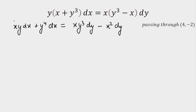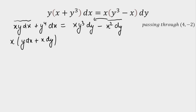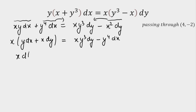From the first and last terms, taking x common and rearranging, we can identify the exact differential d(xy) — this is the product rule written out. Taking the remaining terms to the other side gives us x·d(xy) = xy³·dy − y⁴·dx on the right-hand side. This sets up the equation for forming another exact differential.